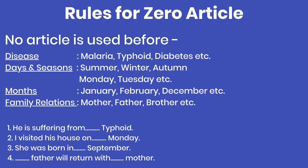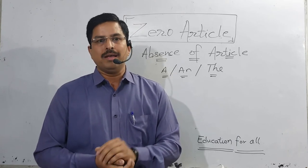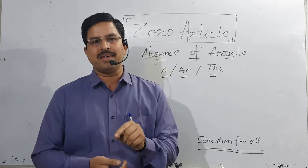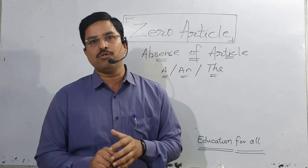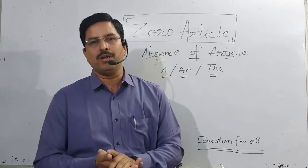The next rule says: no article is used before the names of diseases, days, months, seasons, or family relations. For example: typhoid, diabetes — no article; summer, winter, autumn — no article; February, July, September — no article; mother, father — no article. Exception: diseases like mumps, measles, flu do take 'a' — that is an exception. Otherwise no article is used before any disease.